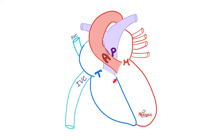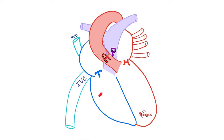The heart has four valves. The mitral valve is between the left atrium and the left ventricle. The tricuspid valve is between the right atrium and right ventricle. The aortic valve is between the left ventricle and the aorta. And the pulmonic valve is between the right ventricle and the pulmonary trunk. Here is a question: where does the coronary sinus drain? Does it drain into the right atrium, left atrium, right ventricle, or left ventricle? Comment below if you know the answer.